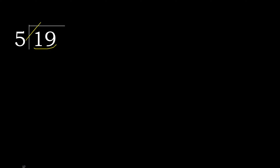5 multiplied by which number is nearest to 19, but not greater? 5 multiplied by 4 is 20 — 20 is greater. 5 multiplied by 3 is 15 — 15 is not greater. Ok.